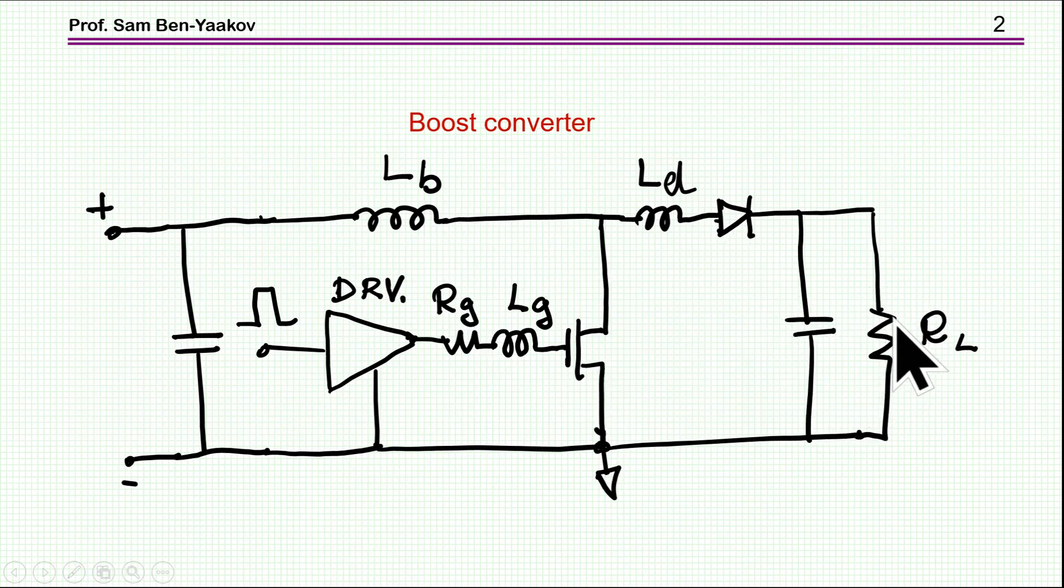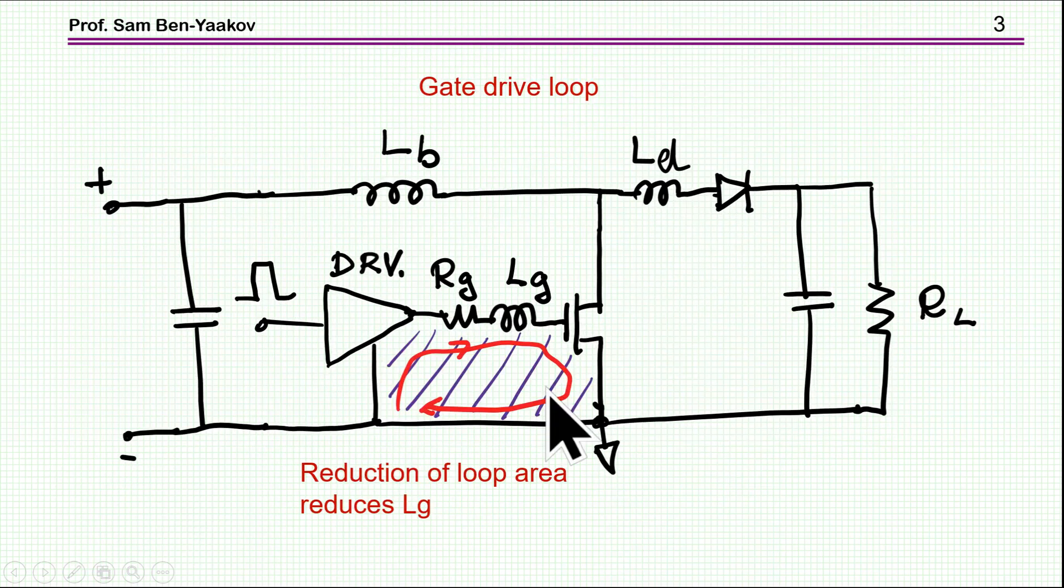and here is the output section. We have a driver, and I'm showing here the stray inductance in the driver loop here, and then there is a stray inductance in the diode loop here.